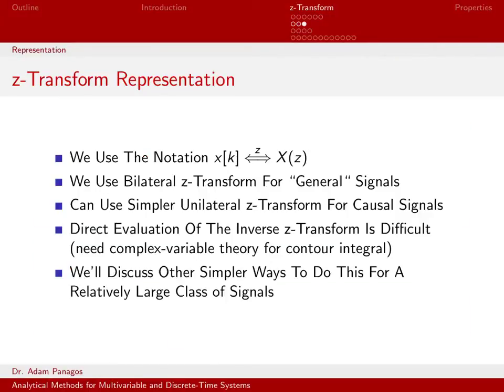Finally, some of the notation we use for these transforms is very similar to the notation for Fourier transforms and discrete time Fourier transforms. We like using this double arrow notation, which indicates we're going from one domain to the other. Sometimes we'll put a little z above it just to make it clear, although usually from the context it's very clear what transform took us from one domain to the other. We use this bilateral z-transform for general signals, so unless otherwise stated, if I say z-transform I really mean the bilateral z-transform.